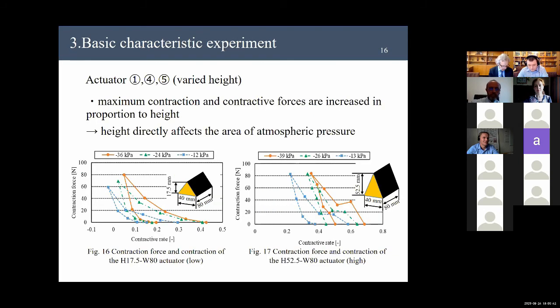The result in 1, 4, and 5 in which the height of the actuator is varied. Figure 16 shows the measurement result of the actuators which is low. Figure 17 shows the measurement result of the actuators which is high. It was confirmed that the increase in the height increases the maximum contraction and the contractive force. This was because the height directly affects the area of atmospheric pressure.